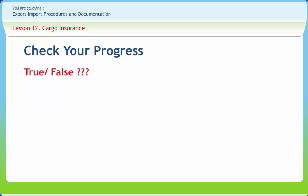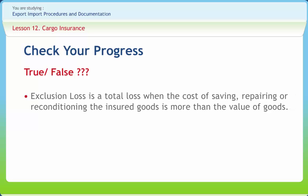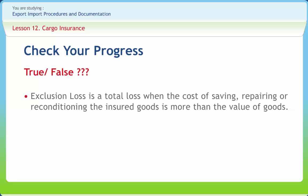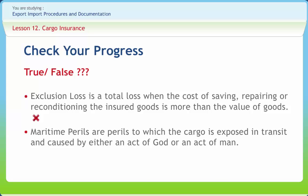Let us check our progress by indicating if the given statements are right or wrong. Statement: 'Exclusion loss is a total loss when the cost of saving, repairing, or reconditioning the insured goods is more than the value of goods.' — Wrong. Statement: 'Maritime perils are perils to which the cargo is exposed in transit, caused by either an act of God or an act of man.' — Right. Statement: 'CTL stands for Construction Total Loss.' — Wrong.